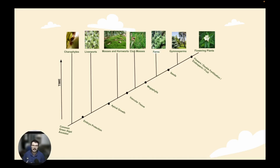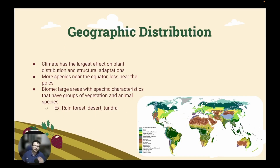These organisms also commonly produce the fruits that we would eat — things like apples, cherries, pears, and oranges are fruit from flowering plants. As far as the geographic distribution of plants goes, plants are basically everywhere at this point. We even have some plants, mainly mosses or low-growing plants, that can grow in tundra regions.